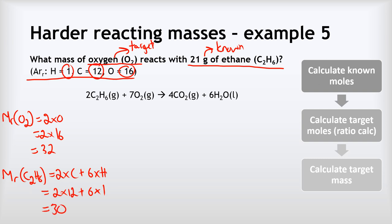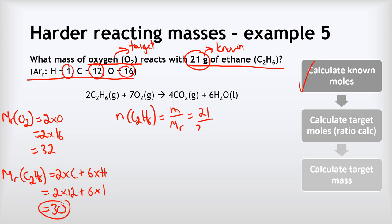Now we calculate the moles of our known substance, ethane. The number of moles of C2H6 equals mass over Mr: 21 grams divided by 30 equals 0.7 moles of ethane.